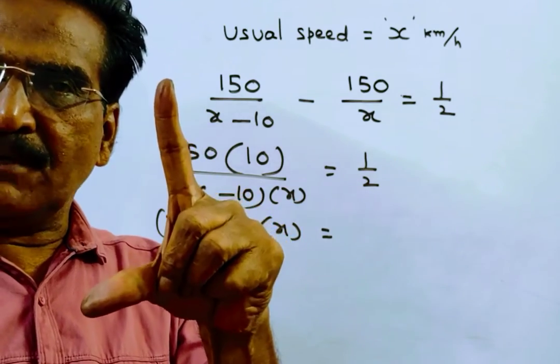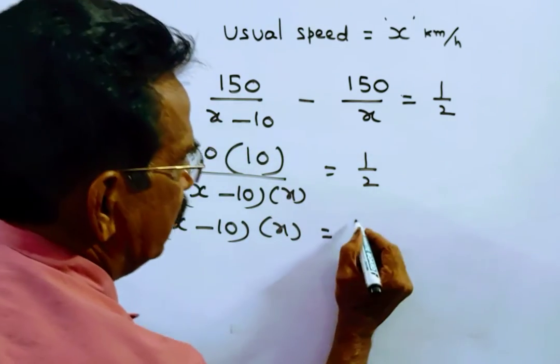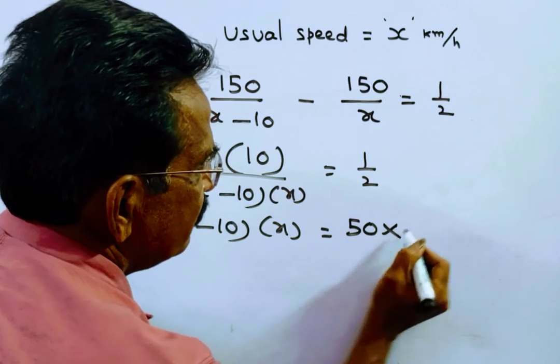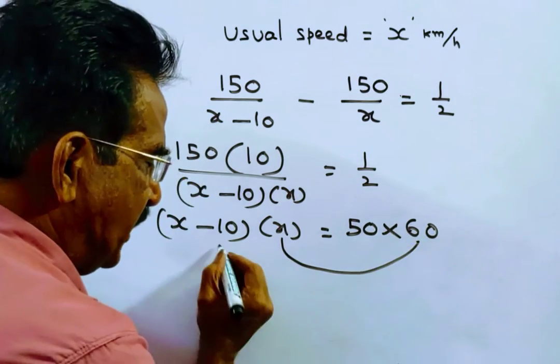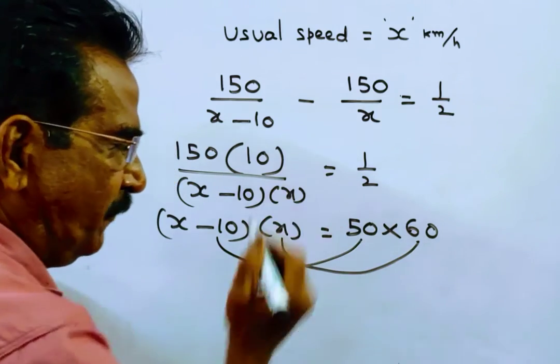3000 equals 50×60. So x = 60, and x-10 = 50.